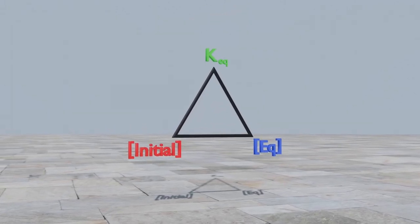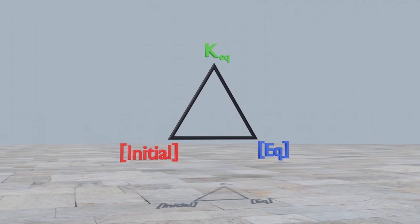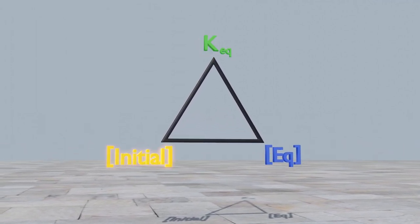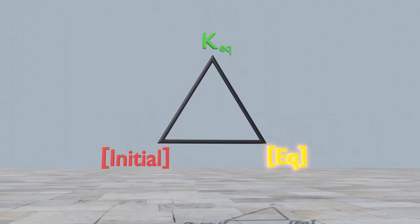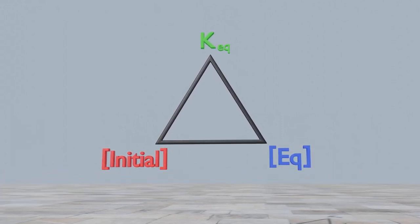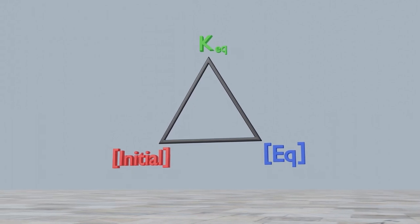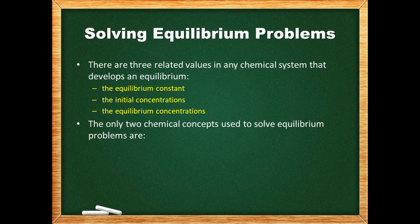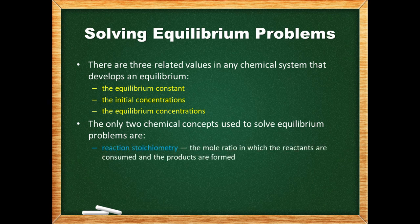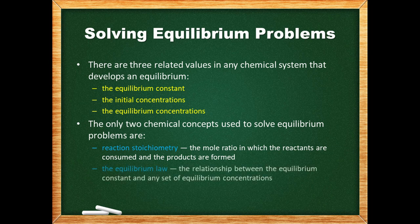There are three related values in any chemical system that develops an equilibrium: the equilibrium constant, the initial concentrations, and the equilibrium concentrations. In equilibrium problems, you are given two of these values and asked to find the third. There are only two chemical concepts used to solve equilibrium problems: reaction stoichiometry — the mole ratio in which the reactants are consumed and the products are formed — and the equilibrium law, the relationship between the equilibrium constant and any set of equilibrium concentrations.